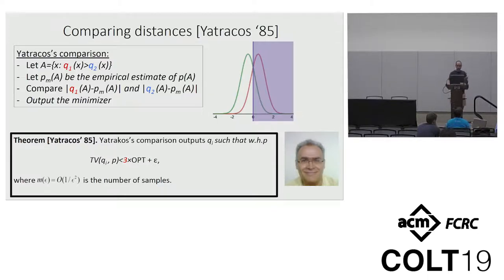And then the next thought maybe is that it's impossible to learn with respect to total variation. But amazingly, Yatracos found this very simple algorithm and the analysis is also very simple. He shows that it is in fact possible to determine which of the Q1 or Q2 is closer to P up to this multiplicative factor of three. As I said, the argument is extremely simple. The reason we have three there is because there are two applications of the triangle inequality.